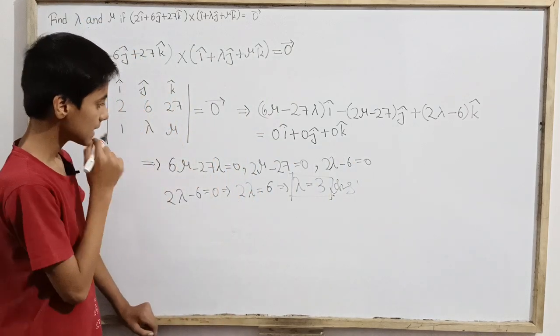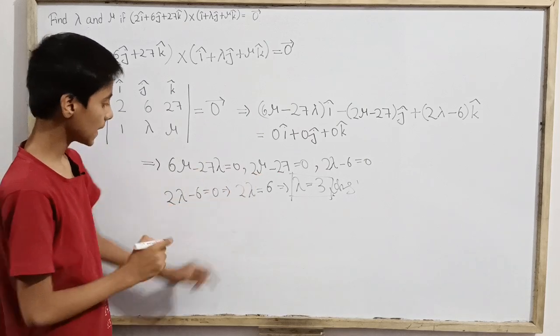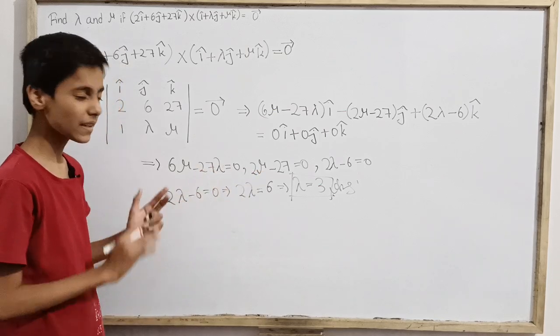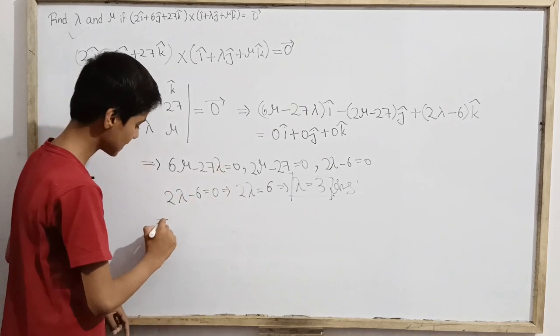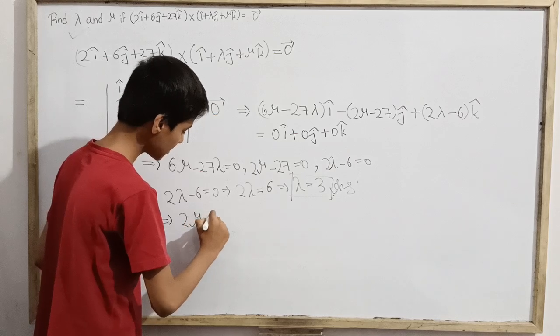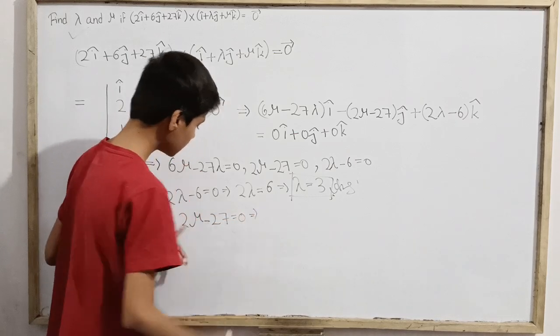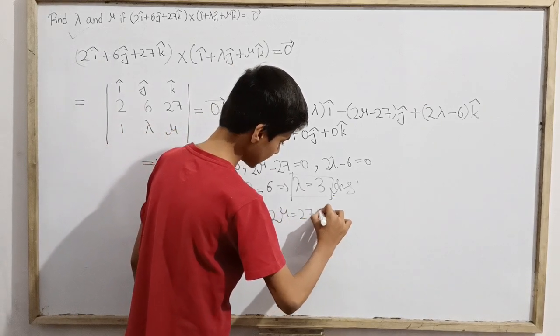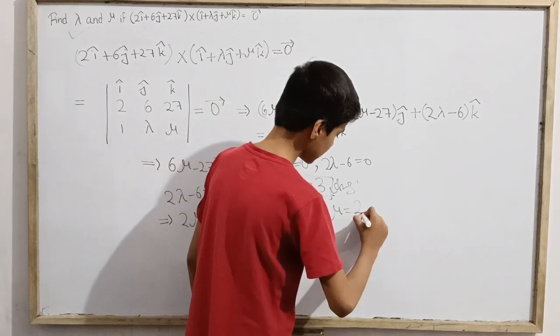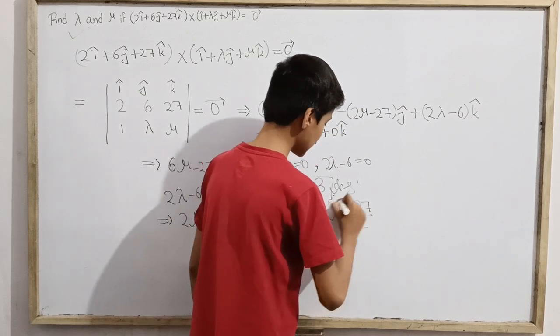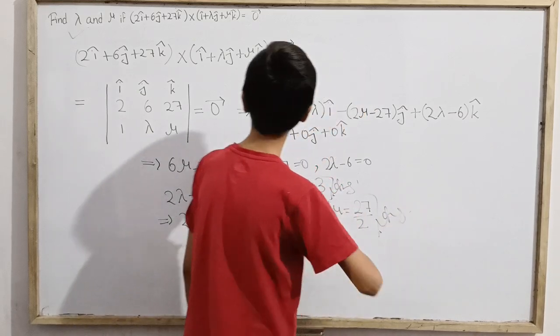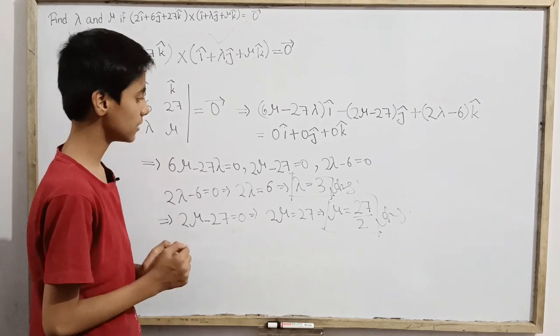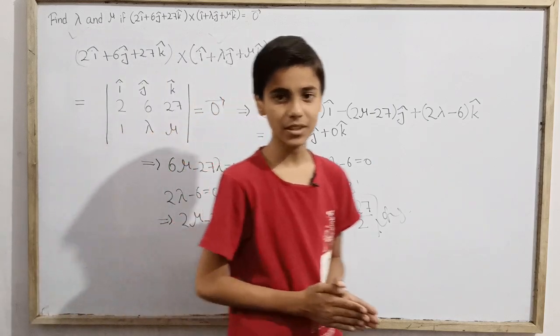So we just got lambda. Now what we have to do is mu. So if we really want to find out mu, we can use this equation. Best way we can use the second equation, so simple. Let's use it. 2 mu minus 27 equals zero. So that's 2 mu equals 27, and this mu equals 27 over 2, that means 13.5. But I don't think we need to write it in decimal form, so we just adjust with rational number. And our second answer is that lambda and mu equal two values, those are 3 and 27 over 2 respectively.